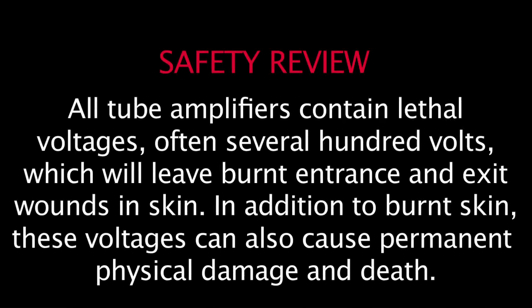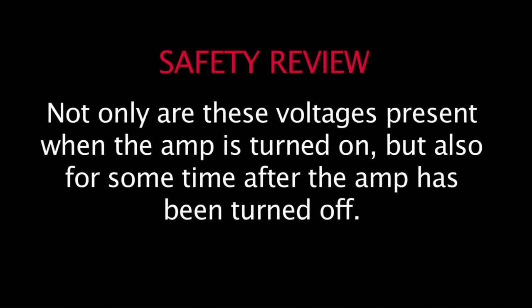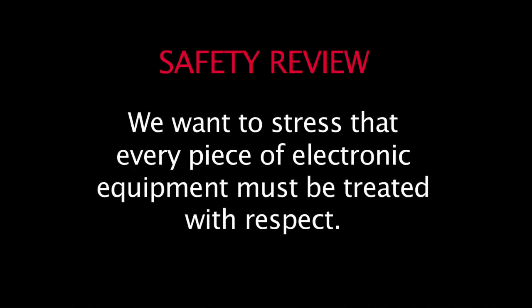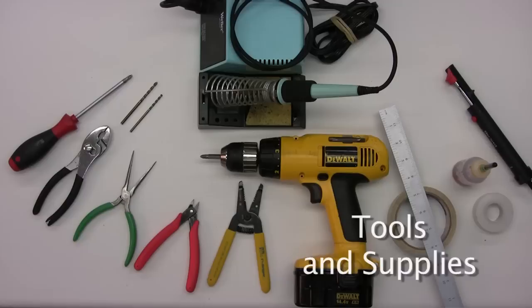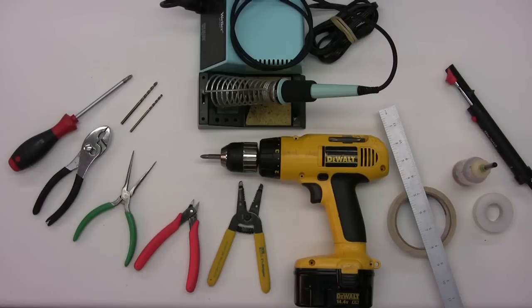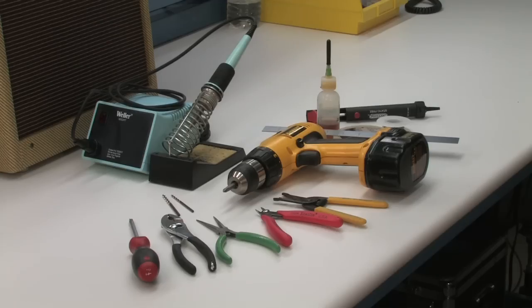All tube amplifiers contain lethal voltages, often several hundred volts, which will leave burnt entrance and exit wounds in skin. In addition to burnt skin, these voltages can also cause permanent physical damage and death. Not only are these voltages present when the amp is turned on, but also for some time after the amp has been turned off. We want to stress that every piece of electronic equipment must be treated with respect. As with any construction project, there are certain tools and supplies that are recommended to complete the project. Please refer to the assembly manual for our recommended list of tools and supplies.